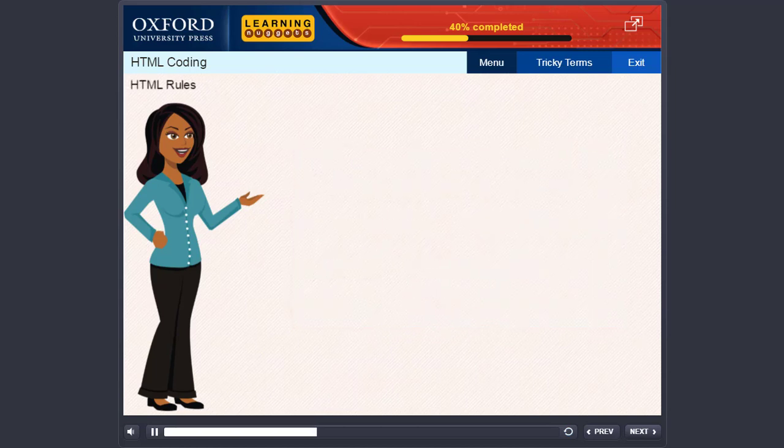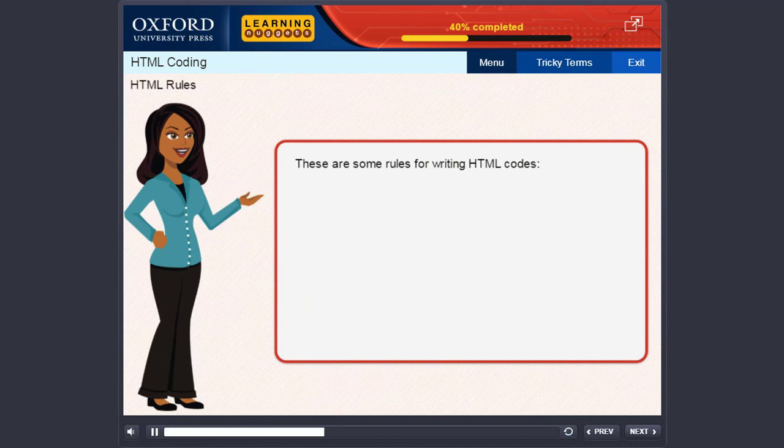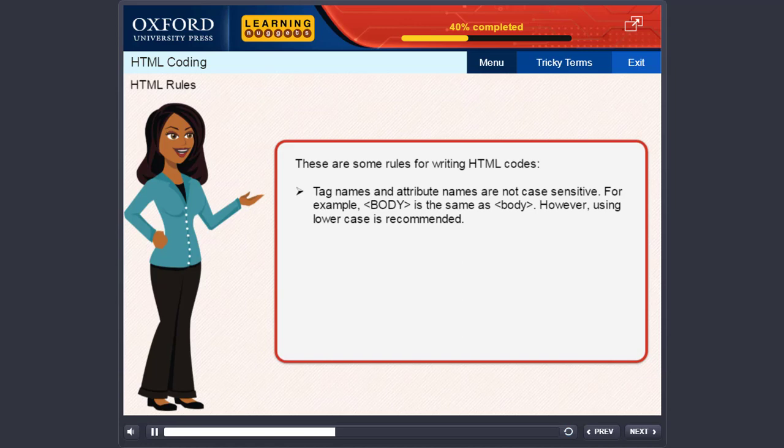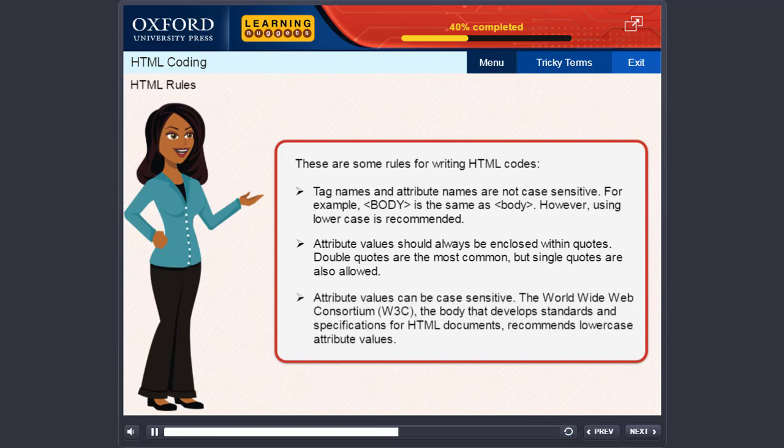HTML rules. There are some rules for writing HTML codes. Tag names and attribute names are not case sensitive. For example, the body tag in uppercase is the same as the body tag in lowercase. However, using lowercase is recommended. Attribute values should always be enclosed within quotes. Double quotes are the most common, but single quotes are also allowed.